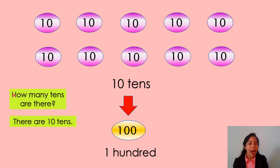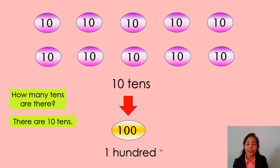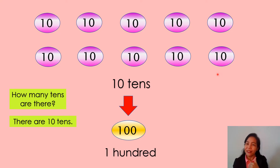Look at this number. What number is it? Very good, it's number ten. How many tens are there? Let's count: one through ten. There are ten tens. Ten tens is the same as one hundred. Ten, twenty, thirty, forty, fifty, sixty, seventy, eighty, ninety, one hundred. Very good — ten tens is the same as 100.